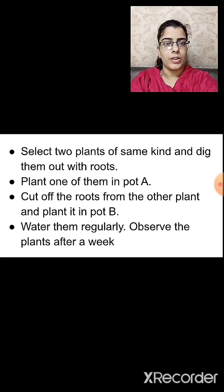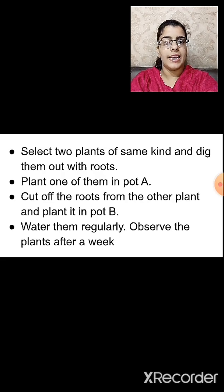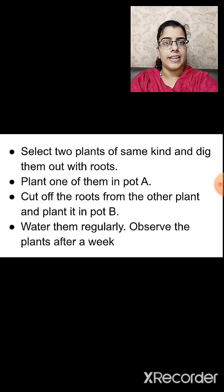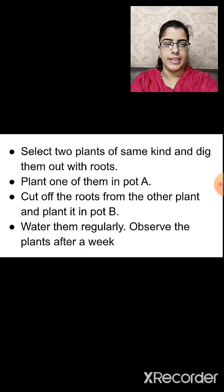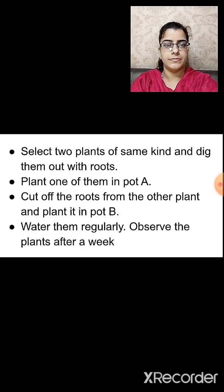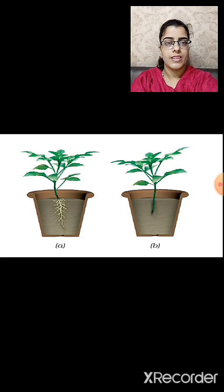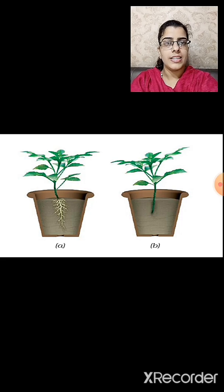Cut off the roots from the other plant and plant it in pot B. Water them regularly and observe the plants after a week. We will observe that the plant that has roots will grow properly, while the plant whose roots were cut will not grow. This shows that roots are very important for a plant to grow.